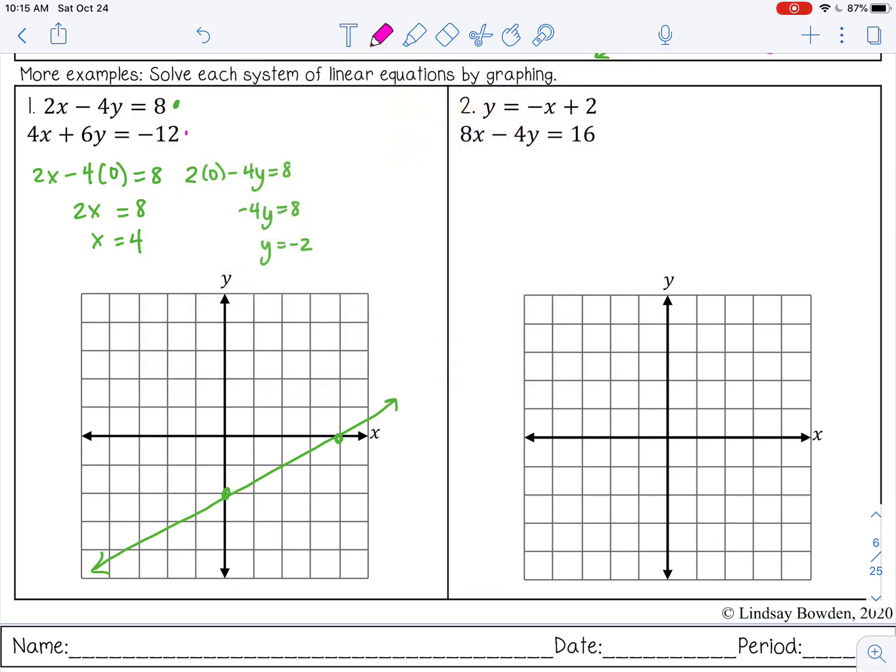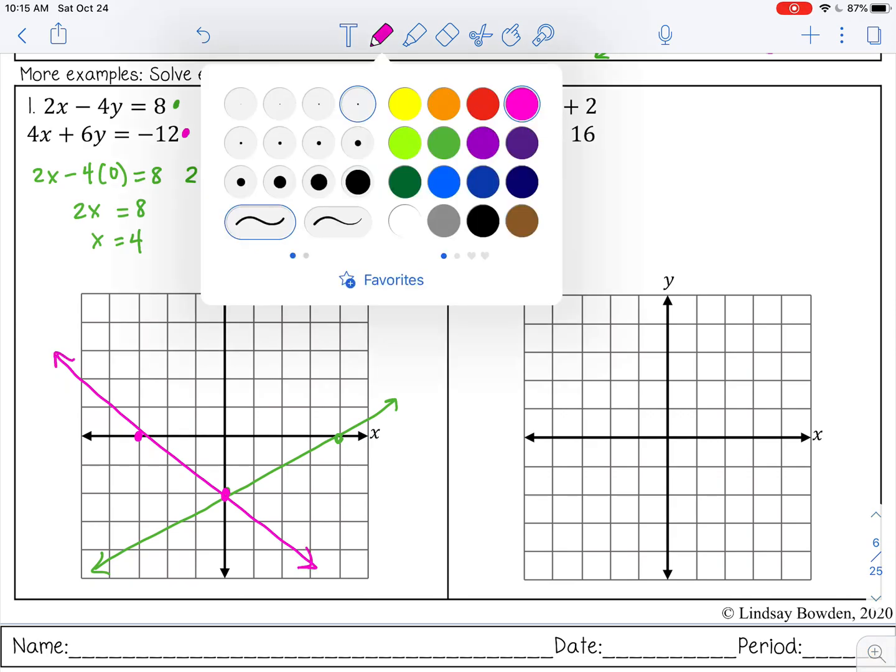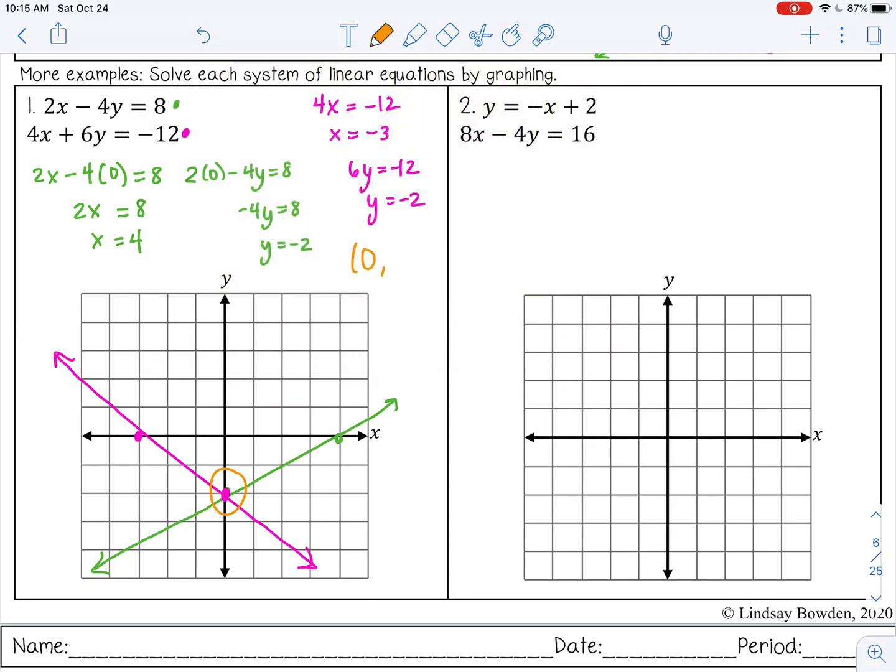So we have four and negative two. I'm going to do the same thing with my other one. I'm not going to write it all out; I know that substituting in zero is going to make that whole term go to zero, so I'm just going to write the x term equals negative 12, which is negative three, and then the y term divided by six is negative two. So x is negative three, y is negative two, and they intersect here at zero, negative two.